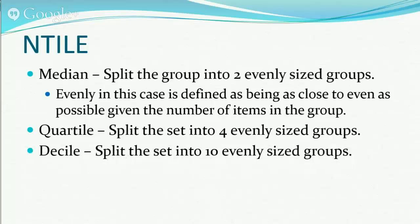Decile — and this is one I hadn't really even used before — is a way to split the group into 10 evenly sized groups. So if you've got 1,000 people in the room and everyone took a test, the people in the 10th decile would be the 10 people with the highest score, independent of what those scores were. And the people in the first decile would be the 10 people with the worst scores out of that entire data set.